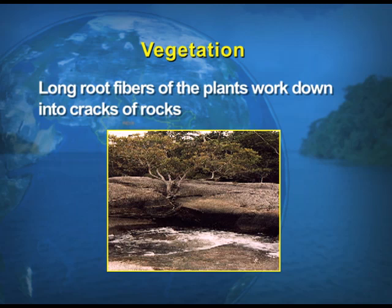The second agent is vegetation. You must have seen unwanted plants growing by the sides of walls or on roofs — that also helps in breaking up the wall or roof. The same thing happens with vegetation, which helps in the disintegration of rocks. The long root fibers of plants work down into the cracks of rocks. This visual shows an unwanted plant by the side of a rock, which has helped in the disintegration of the rock.